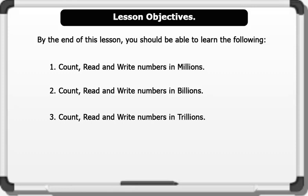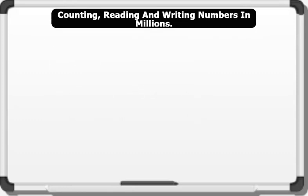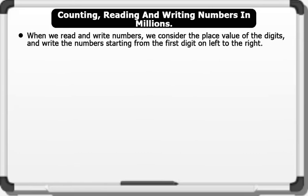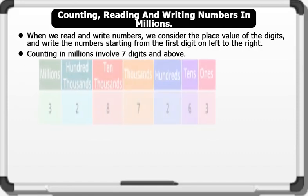Please pay attention as we go through the lesson together. Counting, reading and writing numbers in millions: when we read and write numbers we consider the place value of the digits and write the numbers starting from the first digit on the left to the right. Note that counting in millions involves seven digits and above.